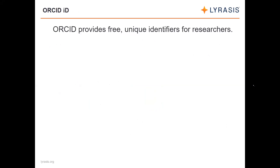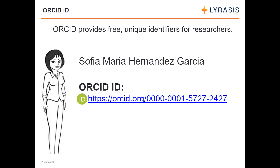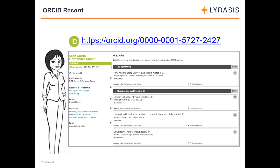ORCID provides researchers with an ORCID ID — a unique 16-digit number that is unique to each person regardless of any changes in their name over time. Anyone can get their own ORCID ID for free. ORCID IDs link to ORCID records — if we click on a researcher's ORCID ID, we are taken to their ORCID record, which is populated with information similar to what you might see on a CV or resume: biography, employment, education and qualification background.